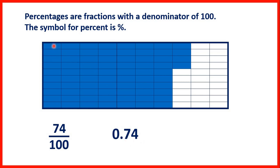Notice also that what we have is the same as 7 tenths and 4 hundredths, so that's why we have 0.74.